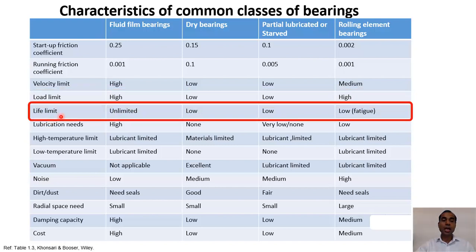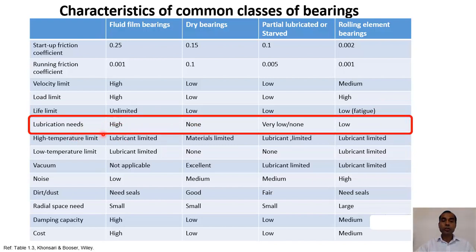For life limits, fluid film bearings have unlimited life as long as hydrodynamic lubrication is maintained with good quality lubricant. Dry and partially lubricated bearings have low life due to wear issues, and rolling element bearings have limited life due to fatigue failure. Regarding lubrication needs, fluid film bearings have high lubrication requirements. Dry bearings require no lubrication, partially lubricated need very little or none, and rolling element bearings have low lubrication needs.